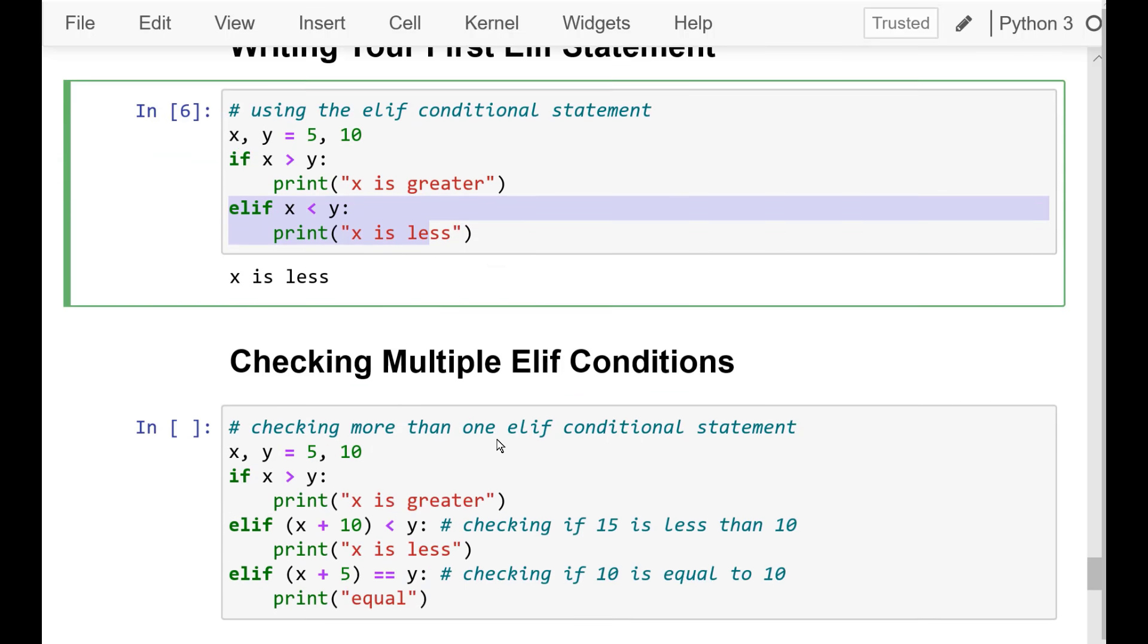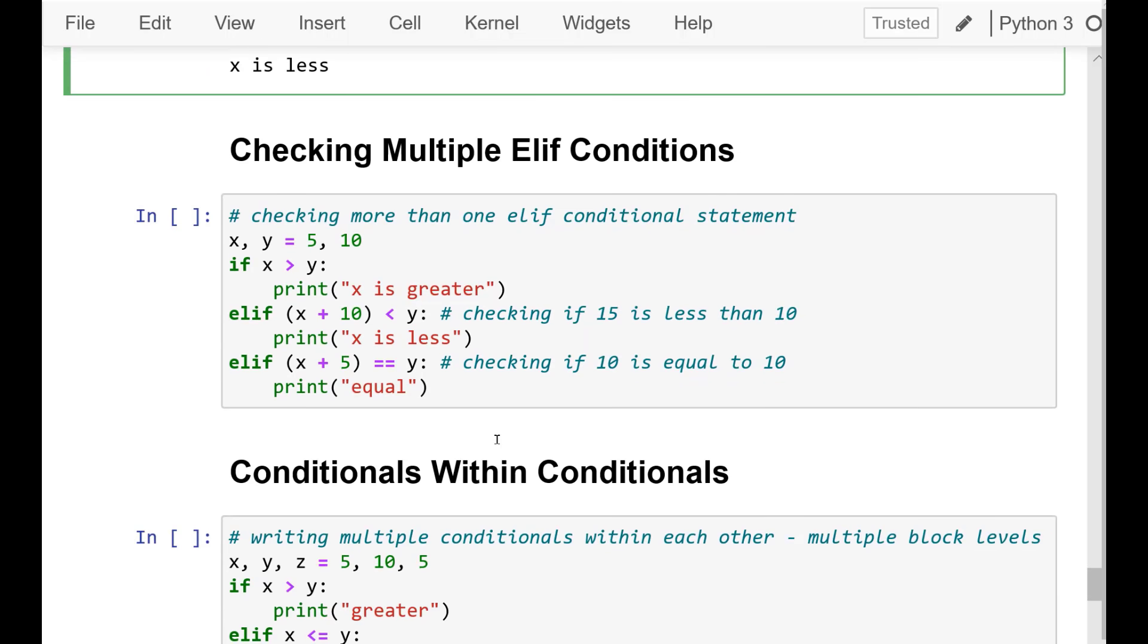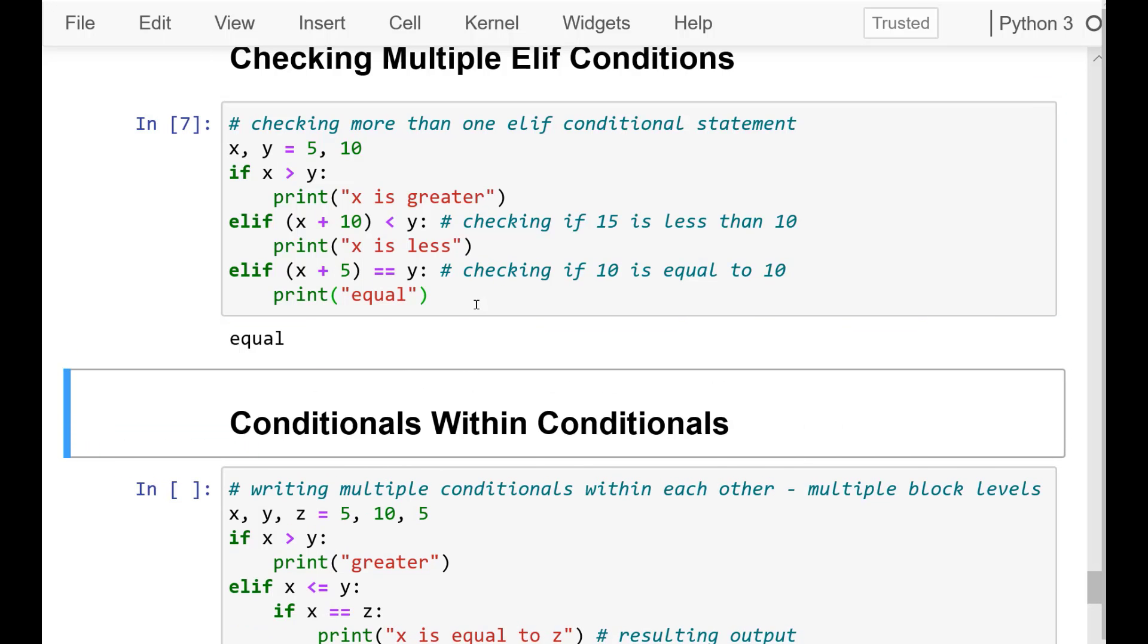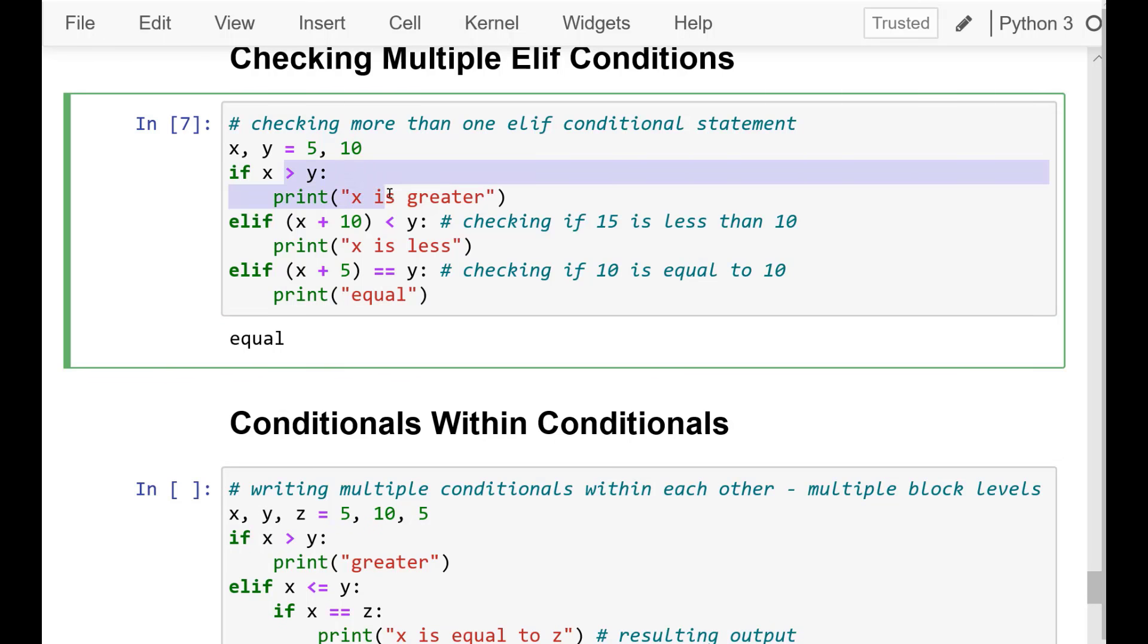Now we can check multiple elif conditions. Having the ability to write multiple decisions based on a single variable is a necessity, which is why elif statements were built. Take the following code, for instance. Go ahead and run that cell. The resulting output is equal. The first if and elif statements both returned false, but the second elif statement returned true, which is why the block of code ran.